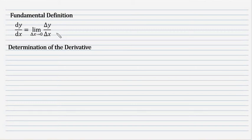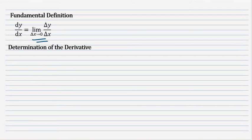In the previous video, we learned a fundamental definition: the derivative of y with respect to x is simply the limit of delta y over delta x as delta x approaches 0. In this video, let's discuss the steps in determining the derivative of a function.